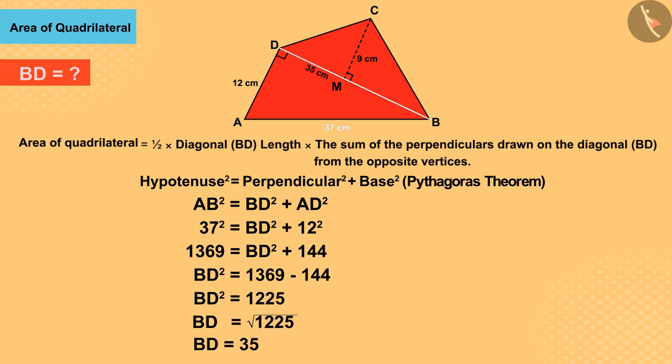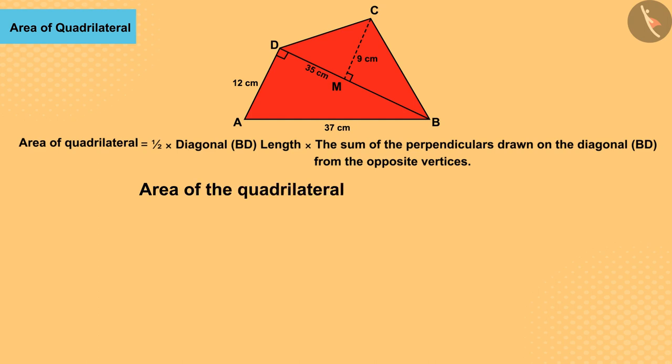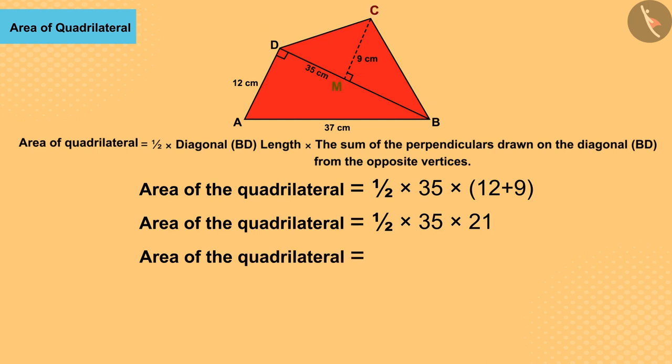Let us now find the area of quadrilateral ABCD. Now we know that BD is the diagonal of the quadrilateral, and AD and CM are perpendicular on the diagonal from opposite vertices, with the help of which we find the area of this quadrilateral.